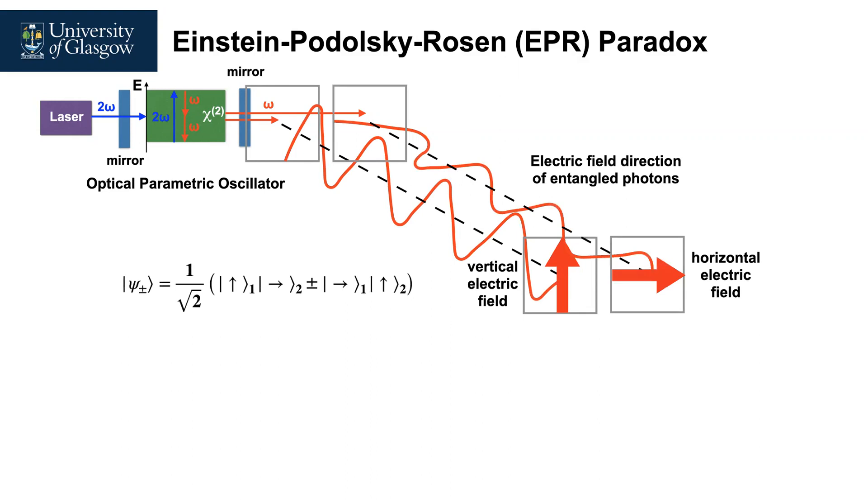Let us send one photon to Alice and one photon to Bob. Now if we separate Alice and Bob by a large distance so that information would have to travel faster than the speed of light, this is forbidden by Einstein's theory of relativity.